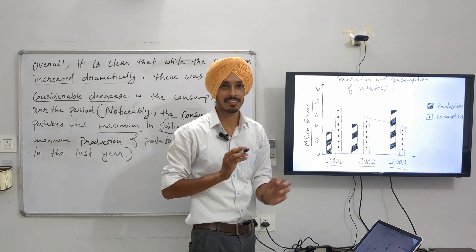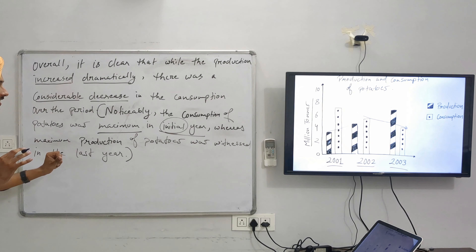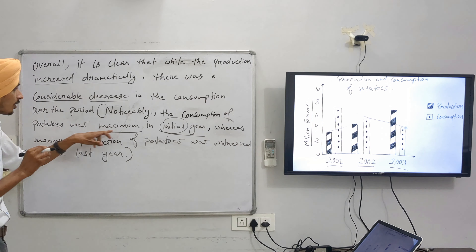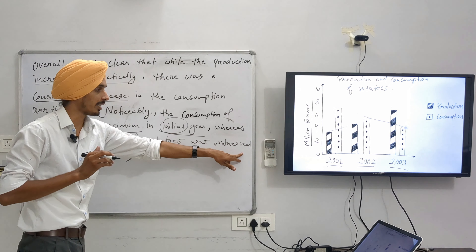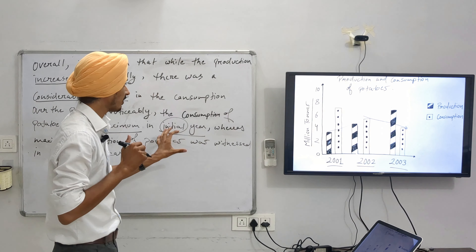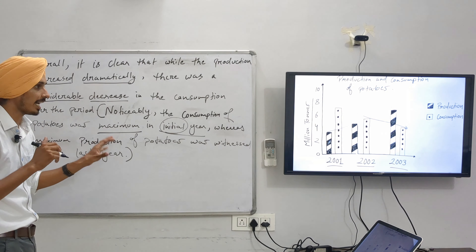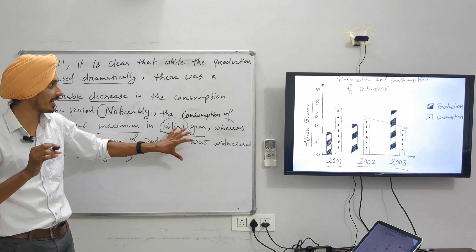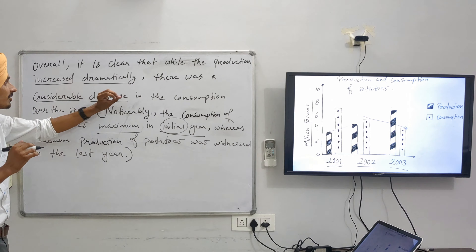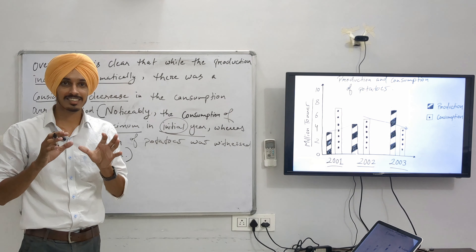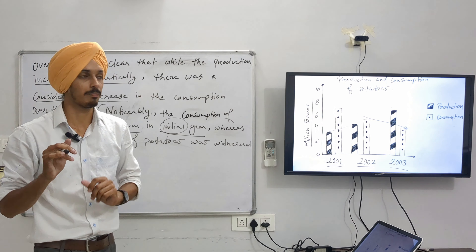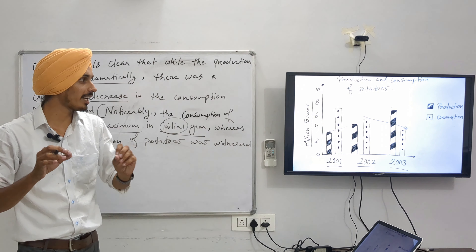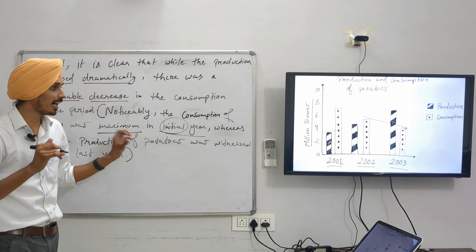The next sentence is: 'Whereas maximum production of potatoes was witnessed in the last year.' So production was maximum in the last year. Notice how I have varied the sentences — for consumption I wrote 'was maximum,' but for production I wrote 'was witnessed.' This variation is important. One way to improve is to cram and learn these sentence structures and use them over and over again in your tasks, varying the wording as we discussed.